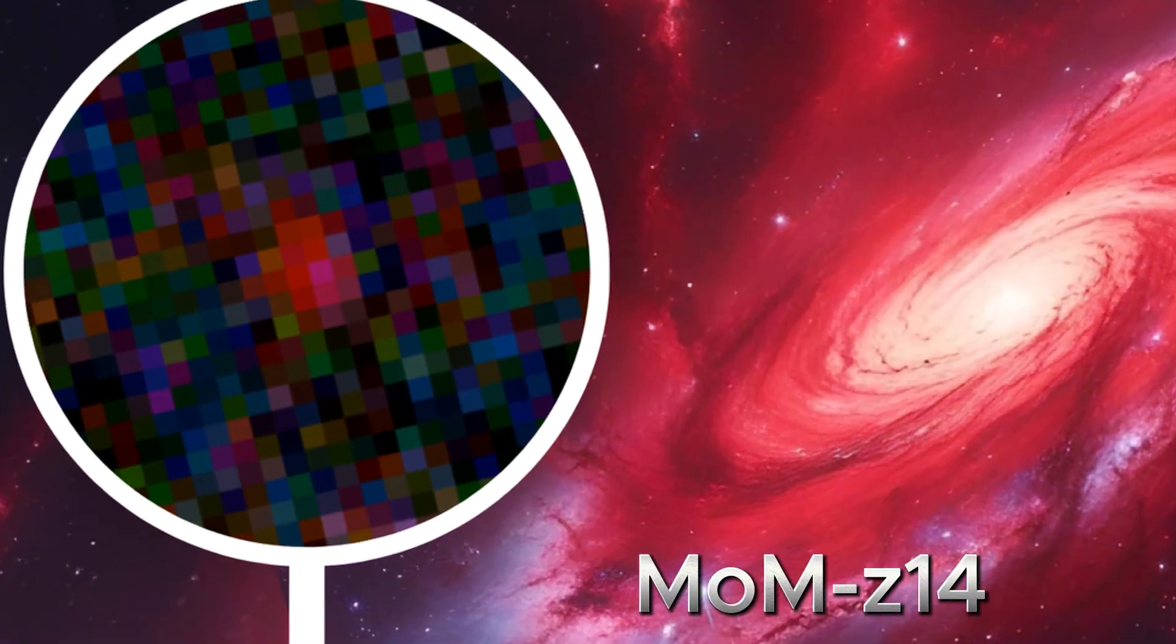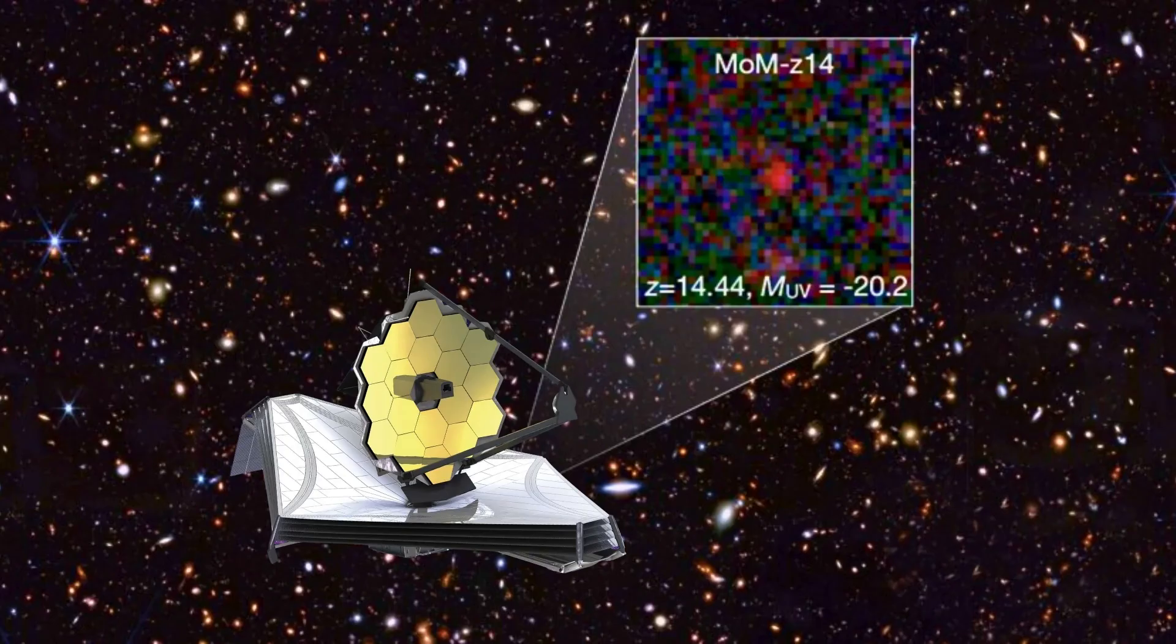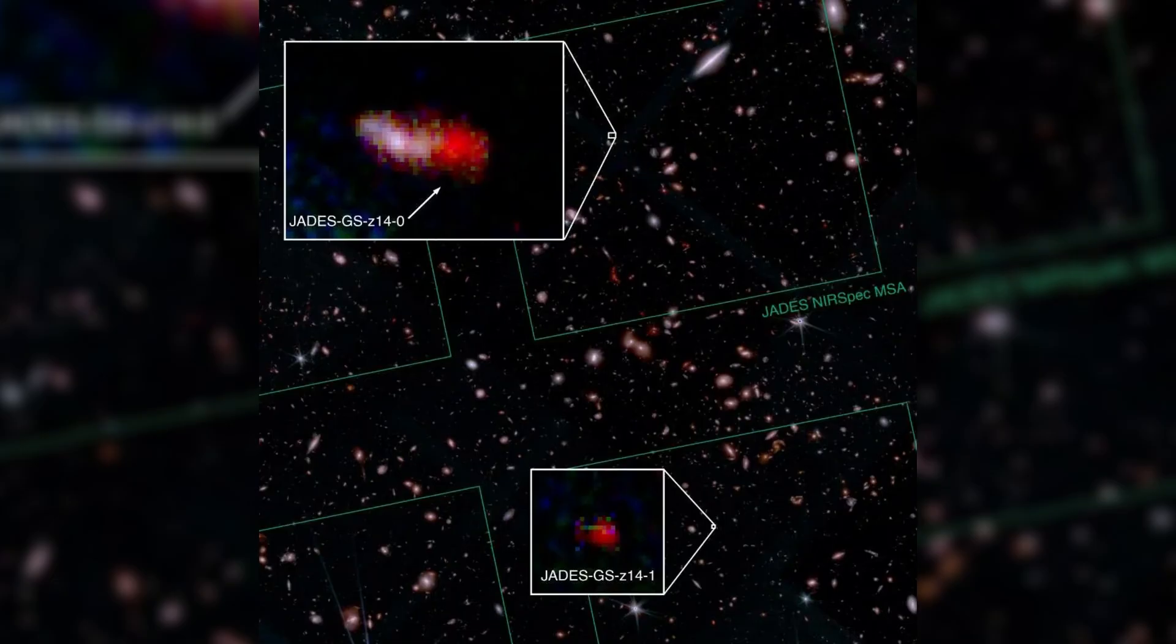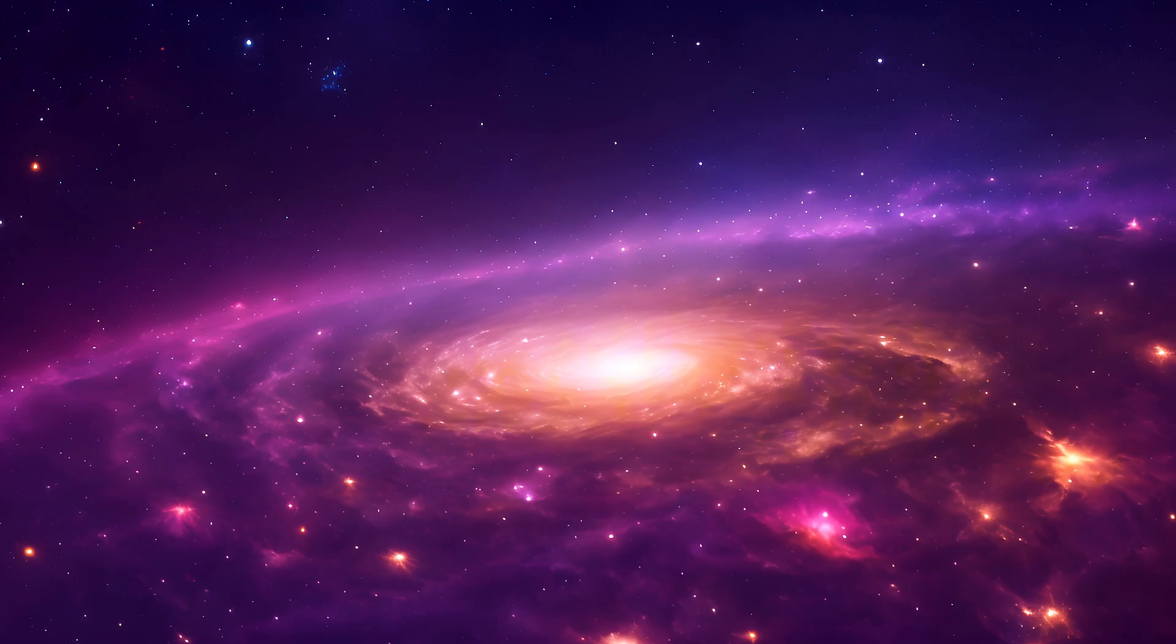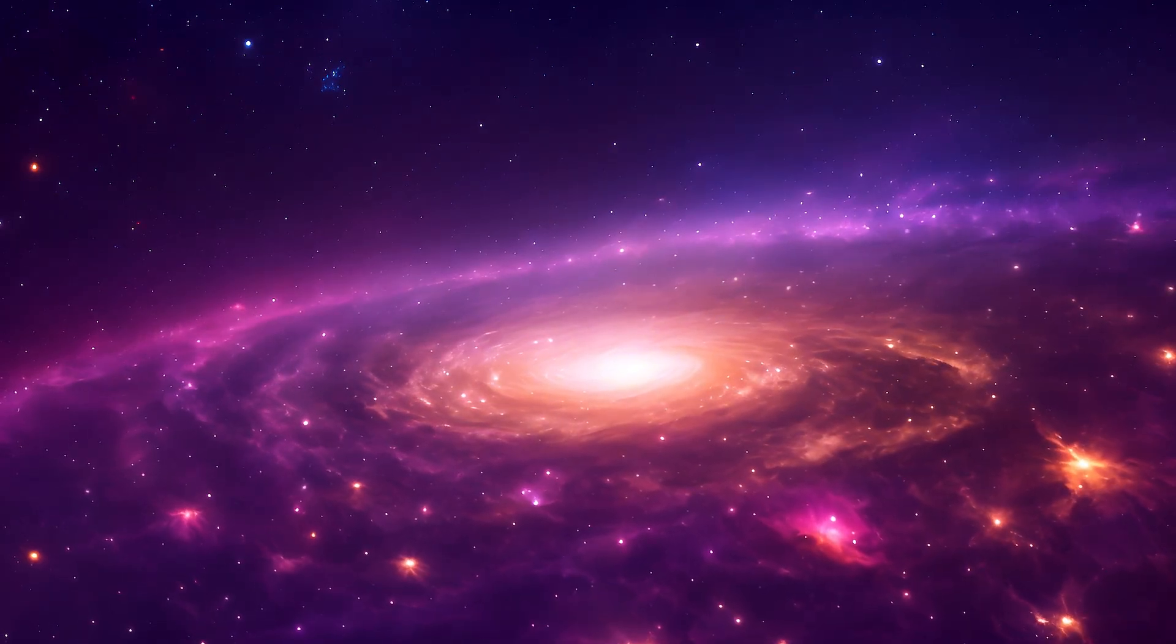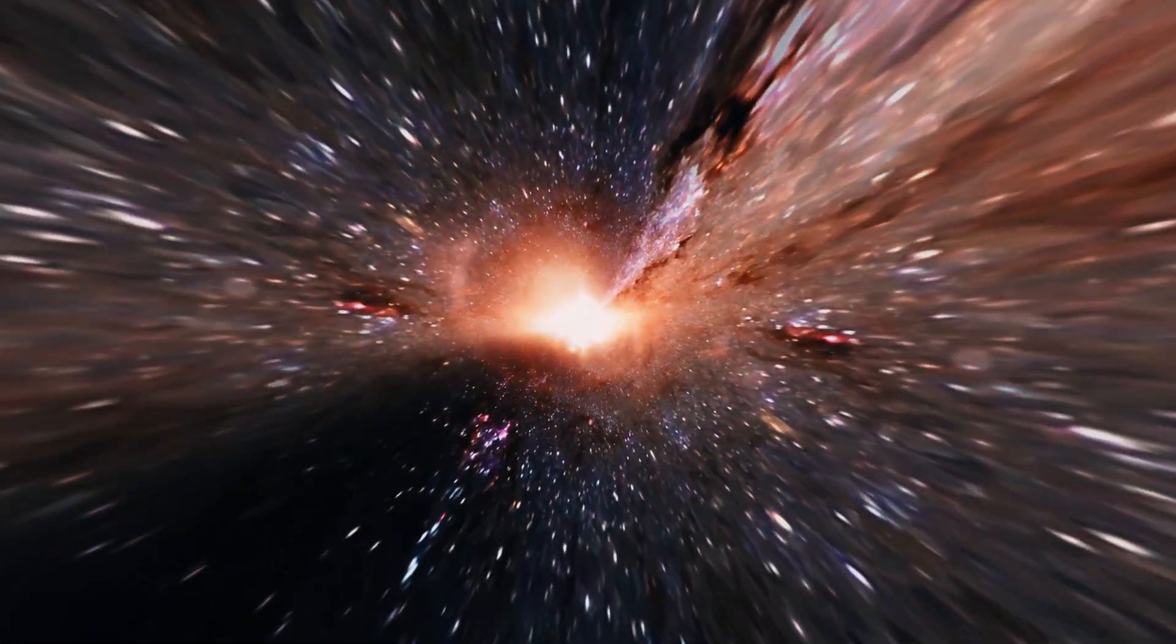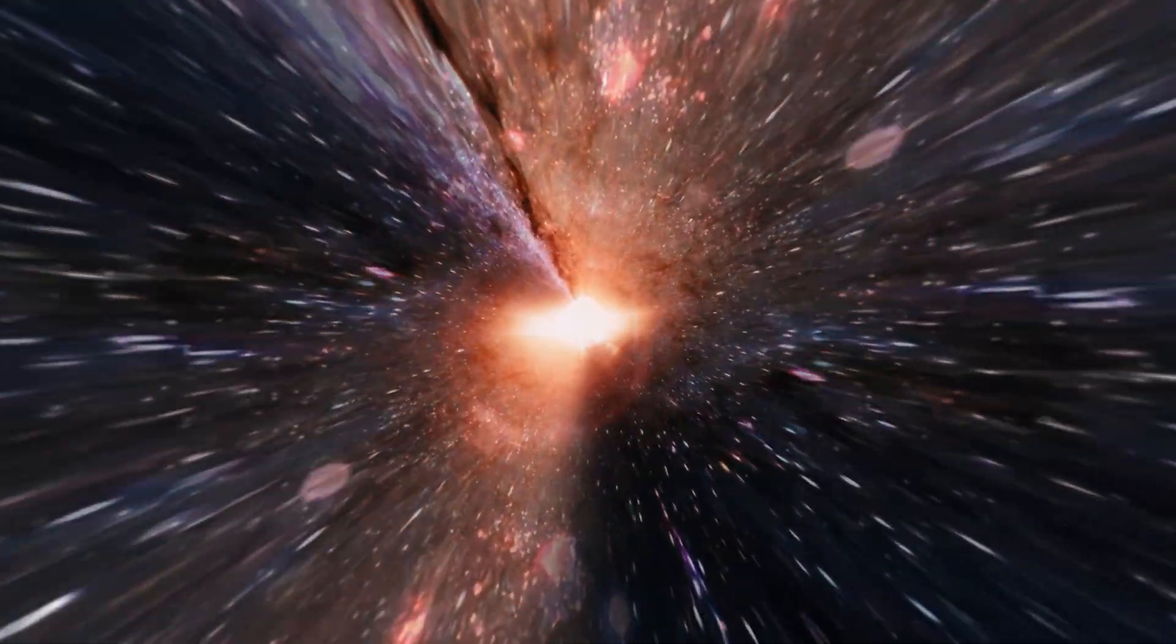Let's meet MOEM Z14. What are we looking at? MOEM Z14 is a compact, surprisingly bright baby galaxy. The name comes from the Mirage or Miracle Survey that's hunting ultra-early galaxies. Z14 tags its extreme redshift. Translation: the universe has stretched its light so much that it only shows up in the infrared.